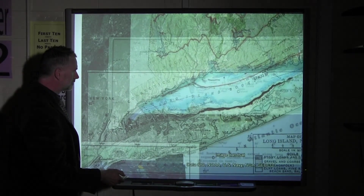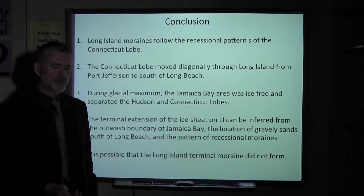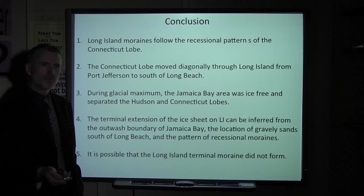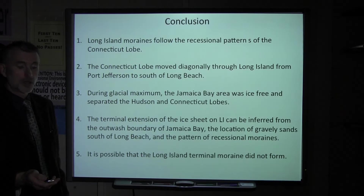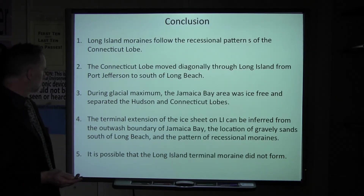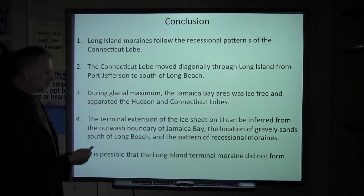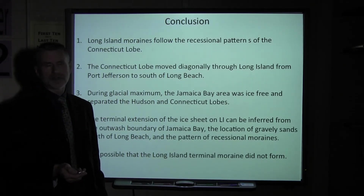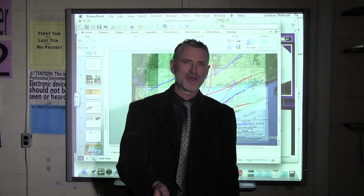As a conclusion, we can say that Long Island moraines follow a recessional pattern, the same one as north of Long Island. We can say that the Connecticut Lobe moves diagonally from Port Jefferson south below Long Beach. Our terminal moraine can be inferred on the basis of the drainage pattern of Jamaica Bay, sediments of the ocean, and the general pattern of glaciation. Also, the terminal moraine most likely did not form. Thank you for watching. Valdemar Paholic from Centralized High School.